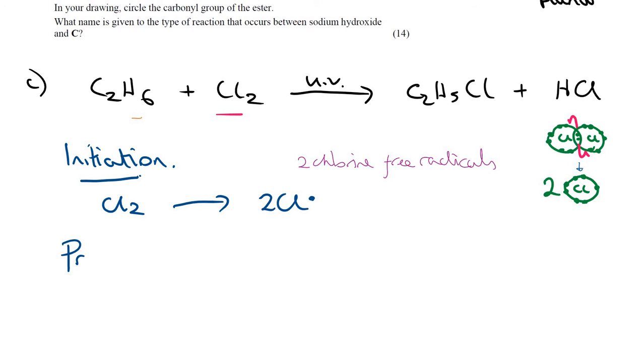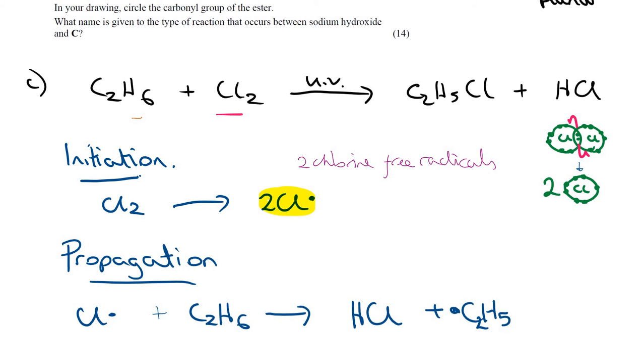The next step is called propagation. The first propagation step is where one of the free radicals will react with the other reactant in the chemical equation, which was our ethane, C2H6. The free radical will abstract a hydrogen atom. You will get homolytic breaking of the hydrogen atom and its carbon atom covalent bond, where you get even breaking of the electrons. You form a carbon radical. They react and it takes a hydrogen atom away. So you form HCl and a radical on the carbon.